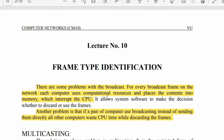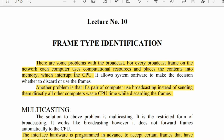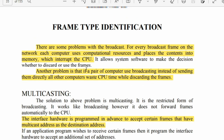Here we have some problems and solutions. We have to study frame type identification. There are some problems with broadcast: for every broadcast frame on the network, each computer uses computational resources and places the content into memory, which interrupts the CPU. Another problem is that if a pair of computers use broadcasting instead of sending directly, all other computers waste CPU time while discarding the frames.